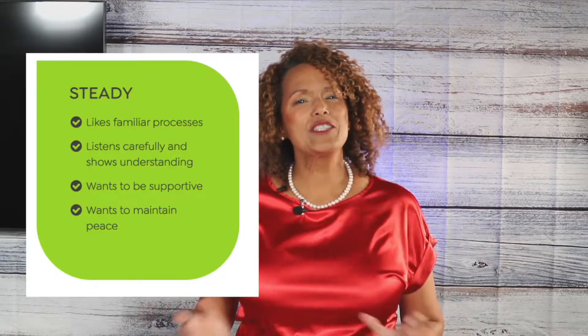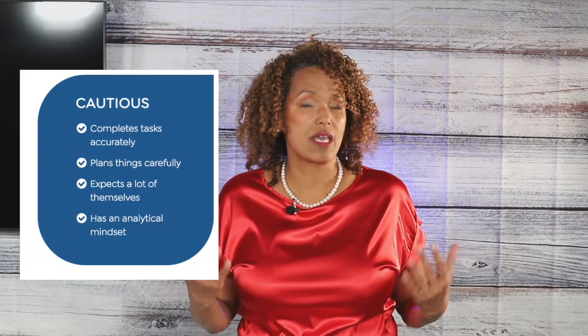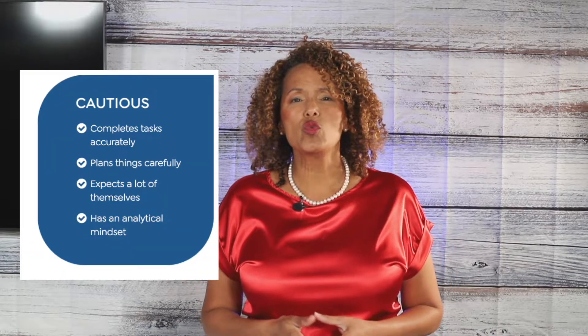The third preference is S for steadiness, and this person likes to be more deliberate in their decision making and in their processes. They are relatable to people, but they really want to take things more slowly, be methodical, and they're really, really loyal people. The fourth and final preference is C for conscientious. This is someone who really focuses on data, precision, accuracy, and they're going to move at a more methodical pace like the S does as well.